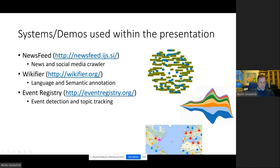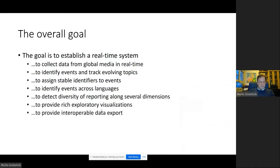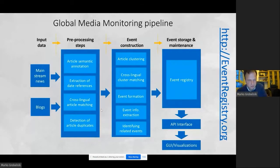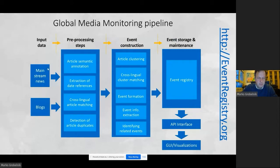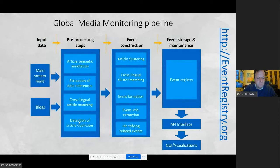I'll show three demos on three links you will see later. The system's architecture: on the left side, we are ingesting mainstream news from over 100,000 publishers across the world — mainstream news and blogs. With this information we do many things: semantic annotation, extracting dates, cross-lingual matching, duplicate detection, clustering, event formation, event information extraction, and contextualizing events. The system is called Event Registry, which has an API and UI. We have registries of people and companies, but not necessarily of news events — that's why we picked that name.